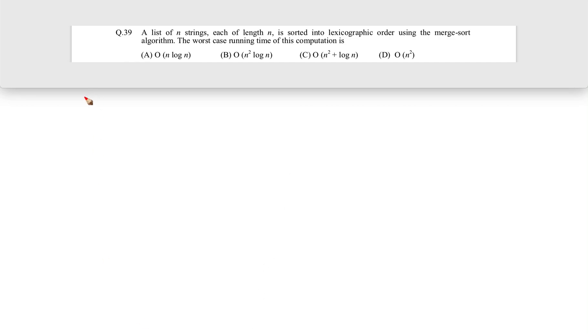Okay, now let's see this question. This question came in GATE 2012. The question is: a list of n strings, each of length n, is sorted in lexicographic order using the merge sort algorithm.